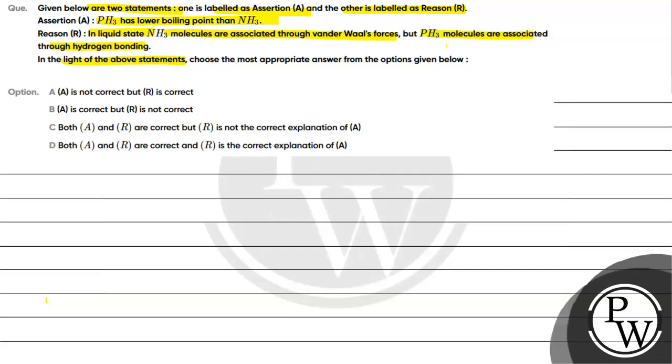Option A: A is not correct but R is correct. Option B: A is correct but R is not correct. Option C: both A and R are correct, but R is not the correct explanation of A. Option D: both A and R are correct and R is the correct explanation of A.